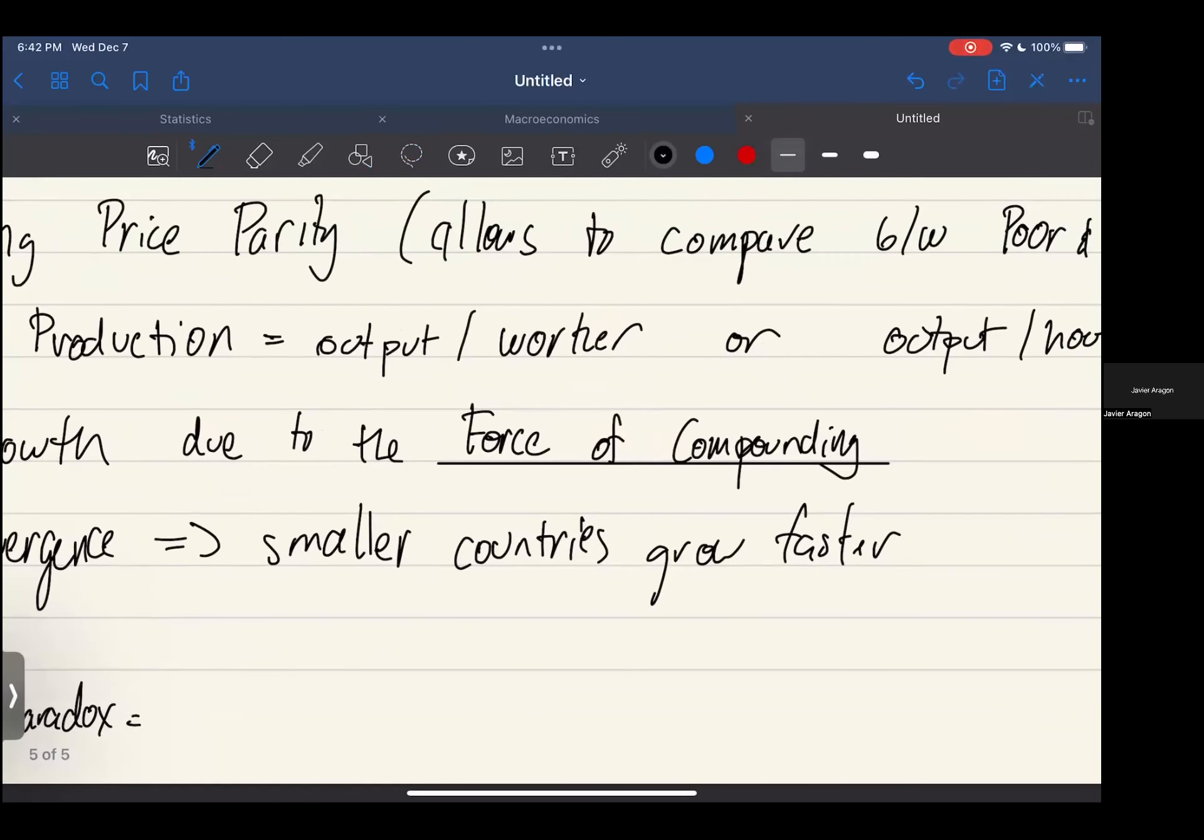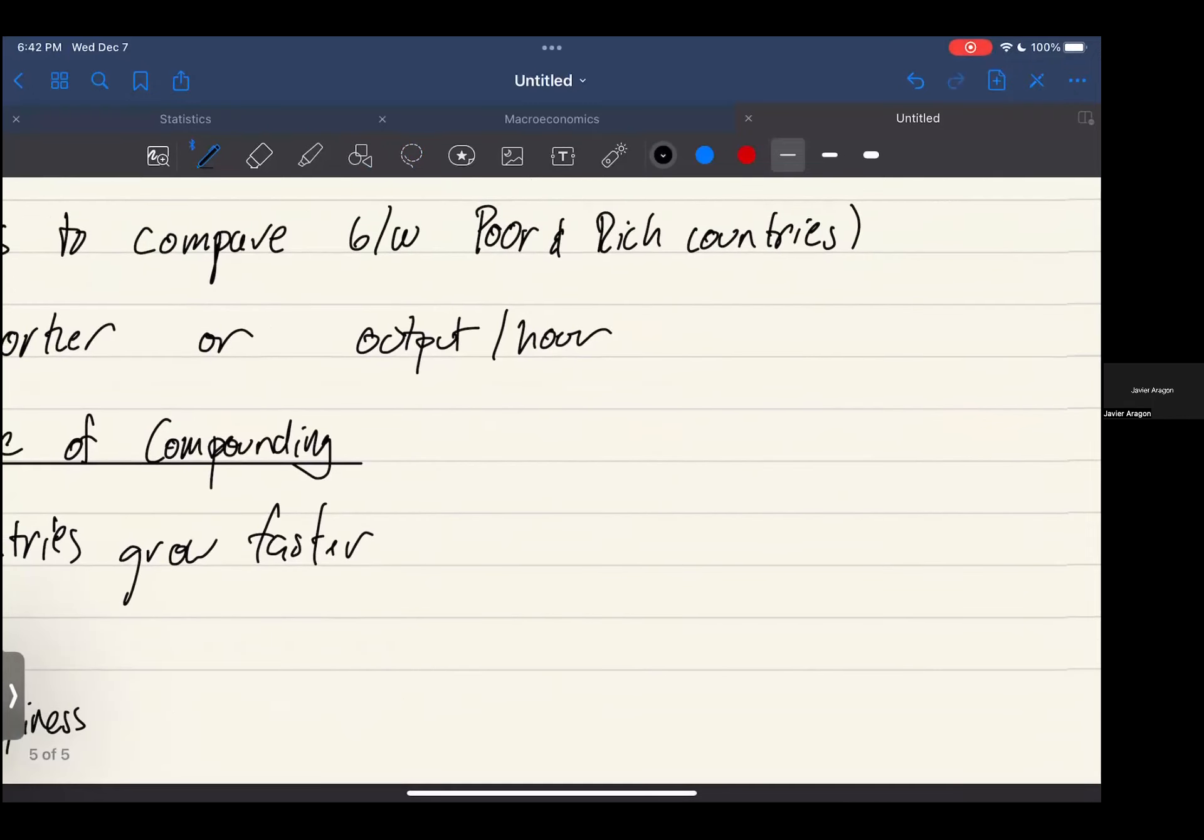The Easterlin paradox basically means in simple terms that money doesn't buy happiness. If any of you have taken economics class in high school you probably saw this, the happiness index of countries. You can see that there are some really rich countries that are not as happy as really poor ones. The Easterlin paradox basically tells you that money doesn't buy happiness after needs are met.